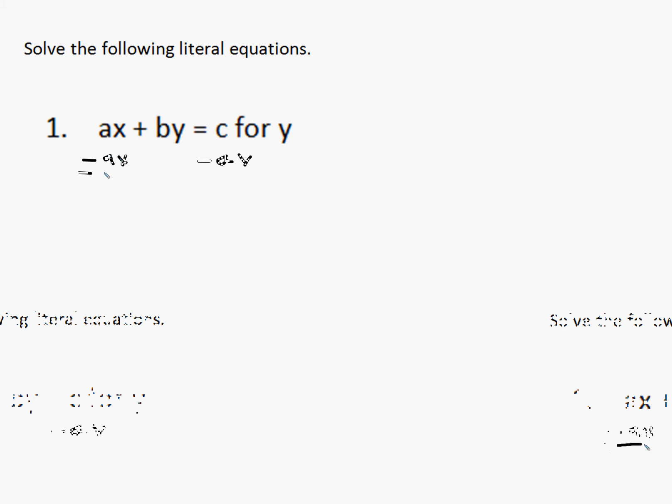When we subtract ax from both sides, on the left side we get by is equal to c minus ax. Now that we have that, we are going to solve for y.